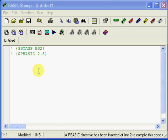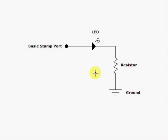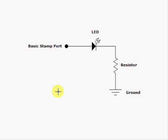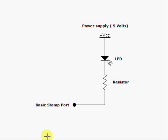Before we light an LED, we must discuss how to connect it to a port of the Basic Stamp. Generally, there are two methods. You can see the first one in the following schematic. The resistor is for current limitation. Because the Basic Stamp can sink more current, we prefer to use the second method, as shown in the schematic.